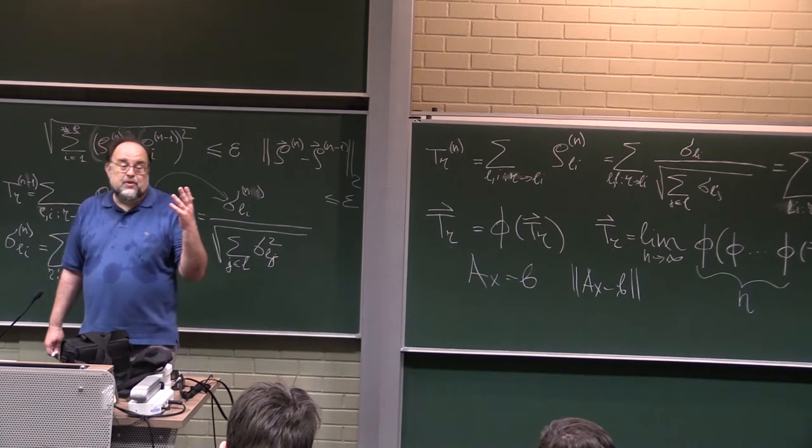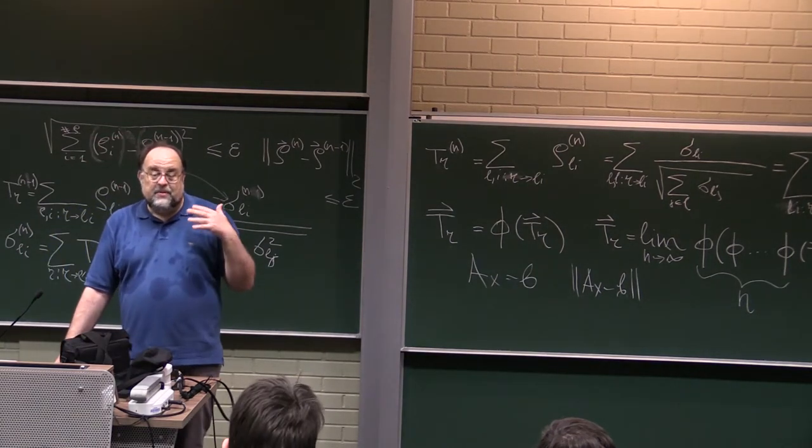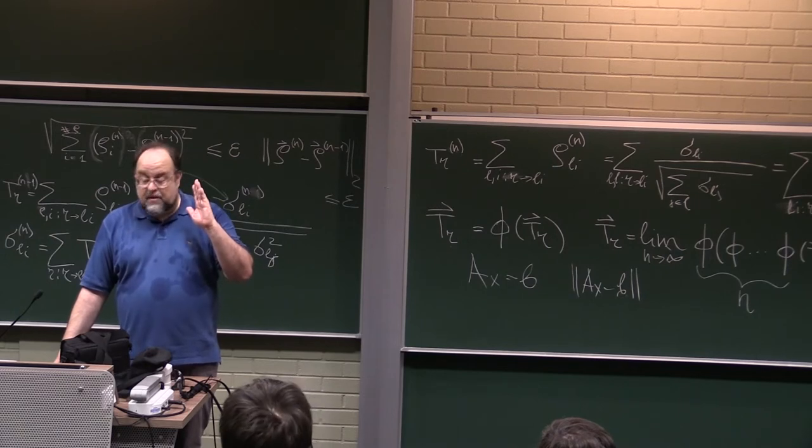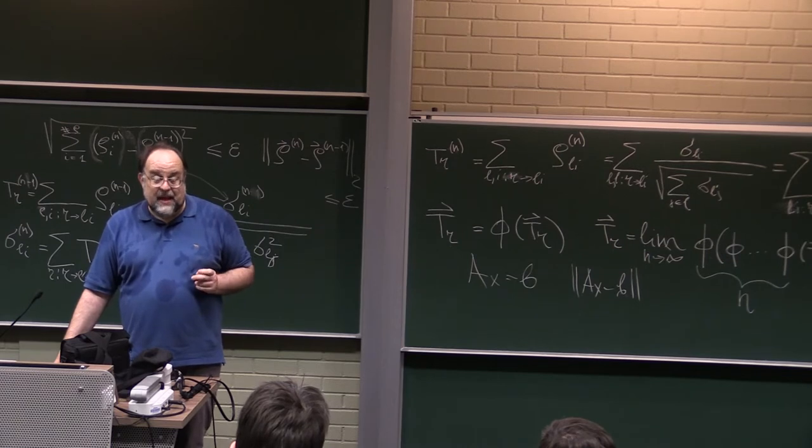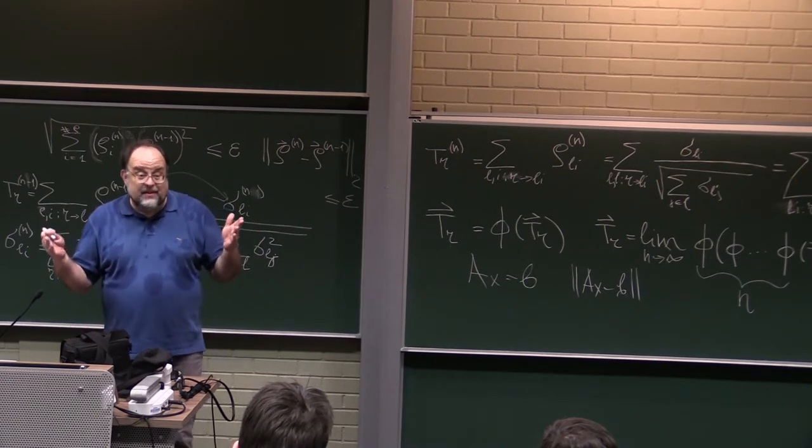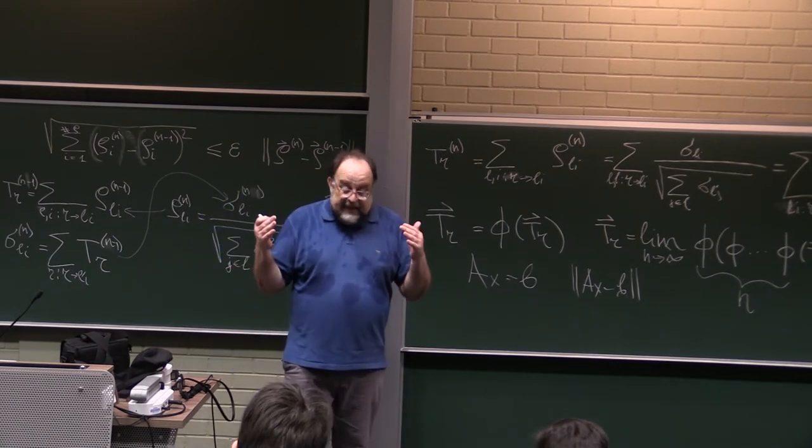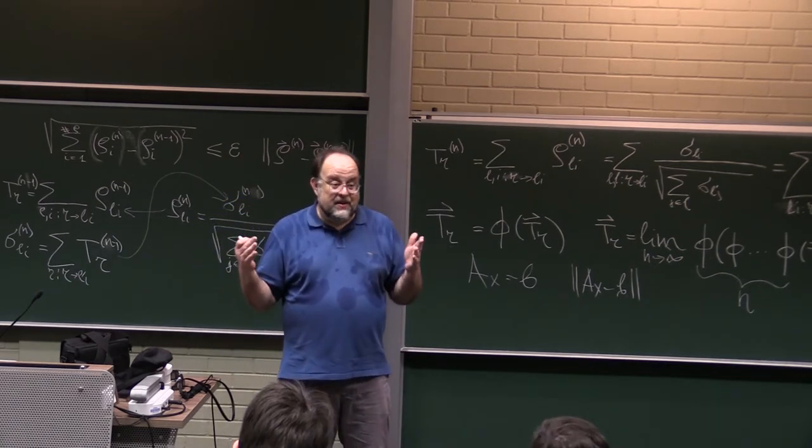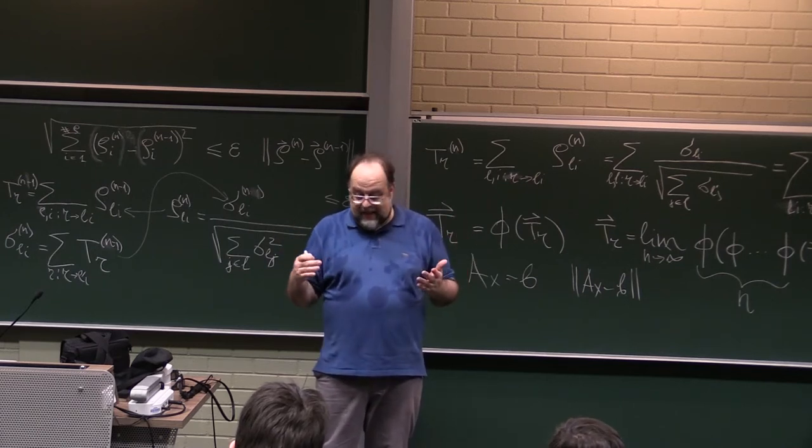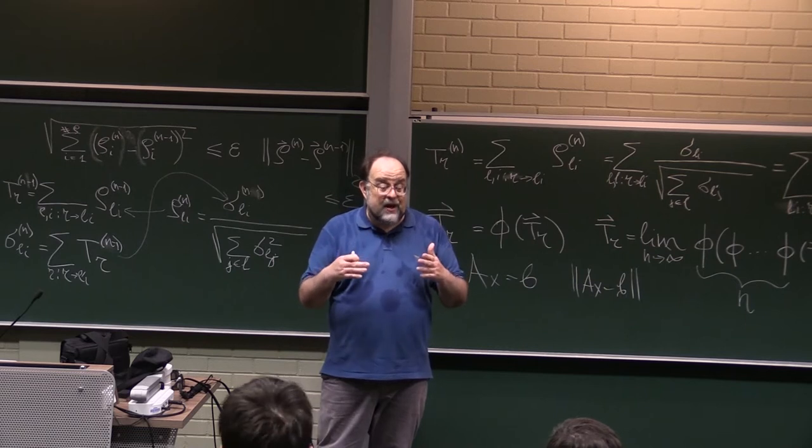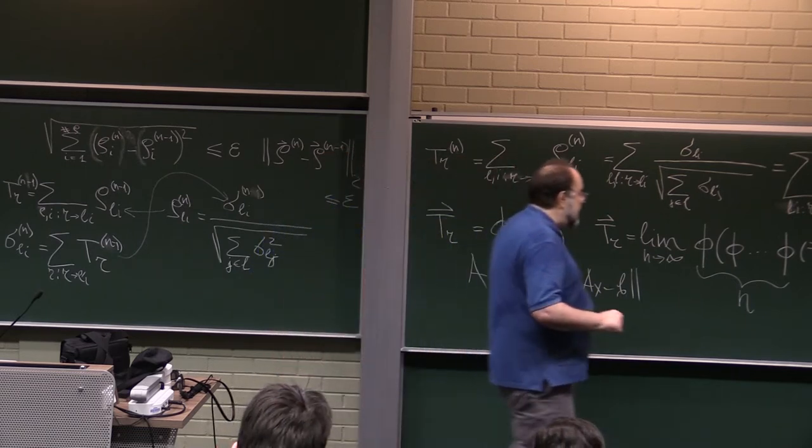And this is what all the software packages like Matlab or Mathematica or just name it actually implement. No one does Gaussian elimination anymore. In fact, you see, you remember when we did the page rank, we showed that page rank is just the eigenvector of a matrix. It used to be, until probably 15 years ago or so, that the way how we find the eigenvectors is first we find the eigenvalue, and this eigenvalue is found by solving the polynomial, the characteristic polynomial.